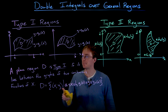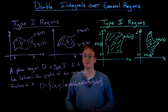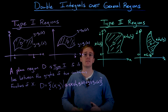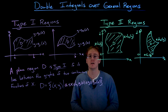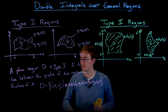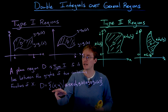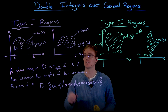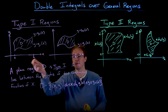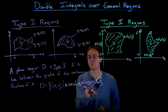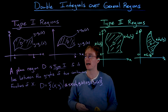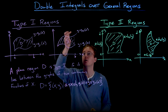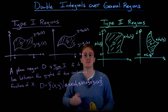A plane region d is a type 1 region if it lies between two continuous functions of x. In set notation, we define d as the set of coordinates x and y such that x is between the constants a and b, and y is bounded between the two continuous functions g1 of x (lower) and g2 of x (upper).